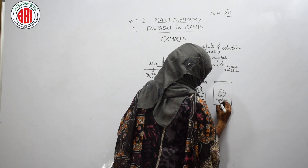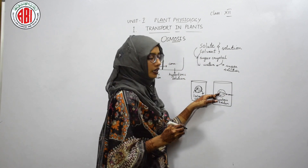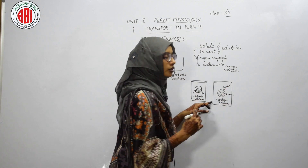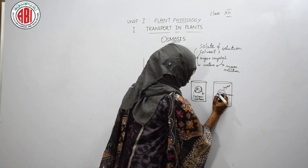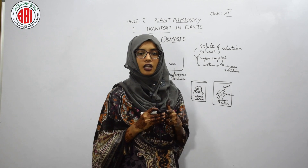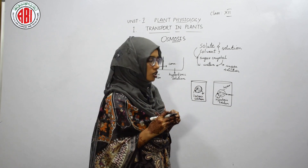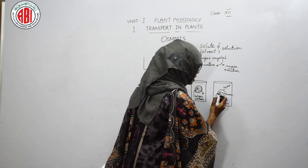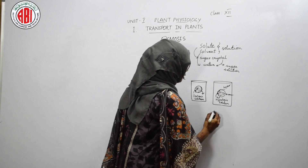In situation 2, when we place the animal cell in hypotonic solution — that is, a less concentrated solution — the concentration of the cellular content is more when compared to the hypotonic solution, so we can term the cell content as hypertonic. We know that water moves from hypotonic to hypertonic, so the water molecules present in the hypotonic solution enter into the cell. The cell swells up and becomes turgid. Since the animal cell does not possess a cell wall, as the cell becomes turgid, it swells, expands, and gets ruptured.